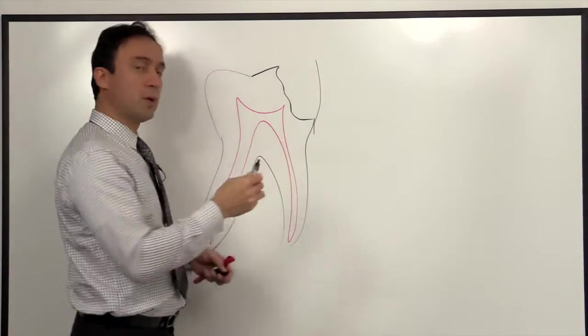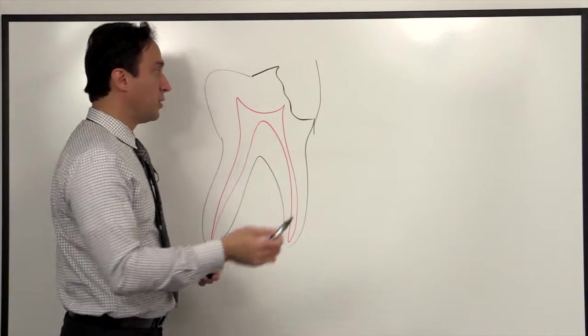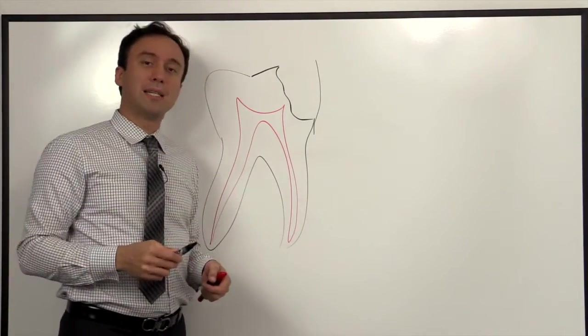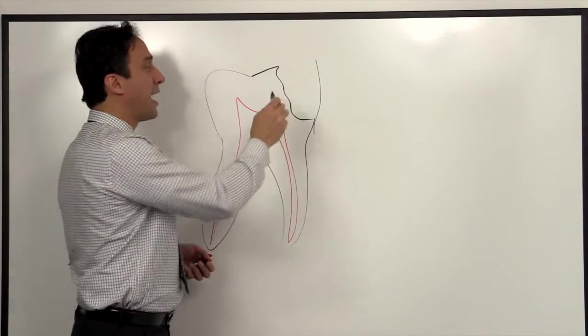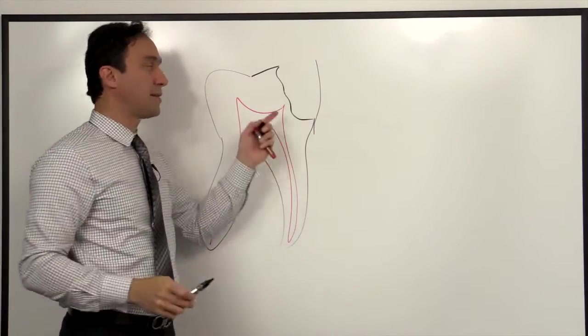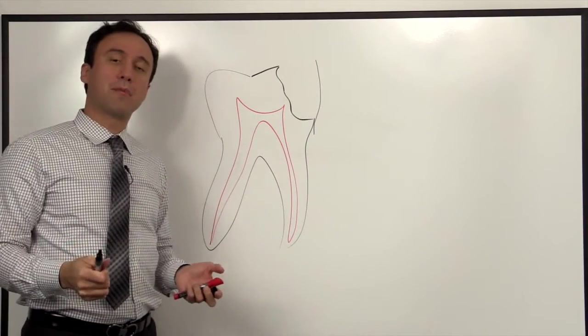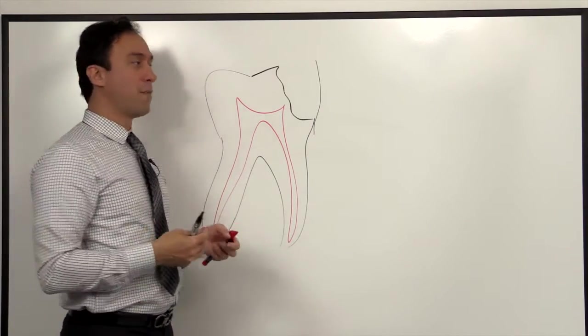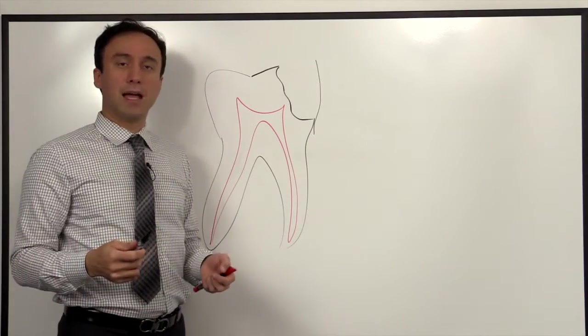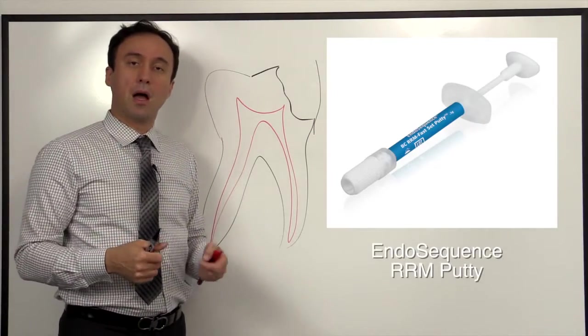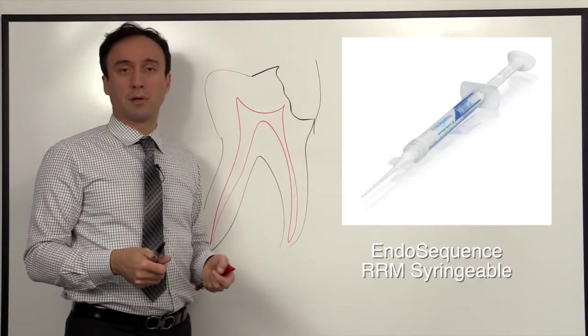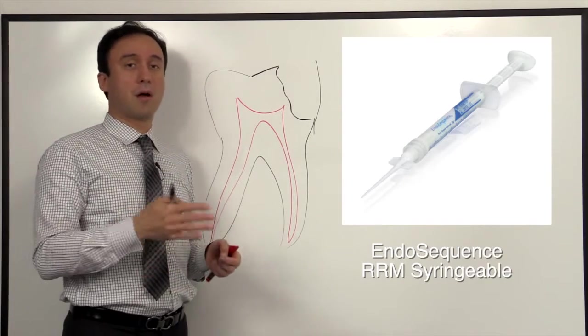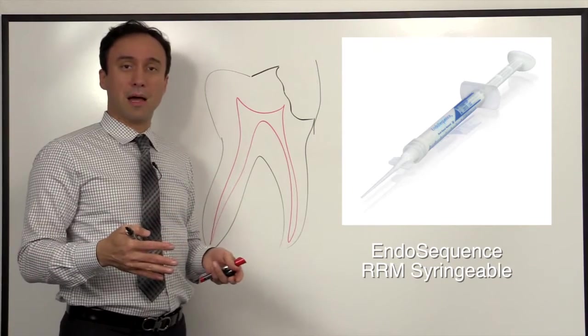What we would end up doing, and one of the things that I do: previously people were using MTA in this particular case, and MTA is a great product. However, the clinical handling and the ability to add some MTA to this area would be a fairly time consuming process. From a clinical point of view, what I have liked has been the use of the RRM putty material or the RRM syringeable material. This is the endosequence RRM bioceramic line.